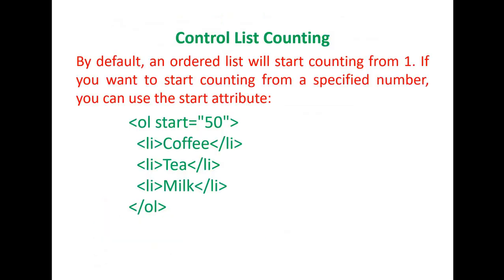Another important property of the ordered list is the start attribute. Here OL start equal to 50 — start is the attribute of the OL tag and 50 is the value. This means the list items — coffee, tea, and milk — will be represented as 50, 51, and 52. The starting value is 50, so 50 is for coffee, 51 is for tea, and 52 is for milk.